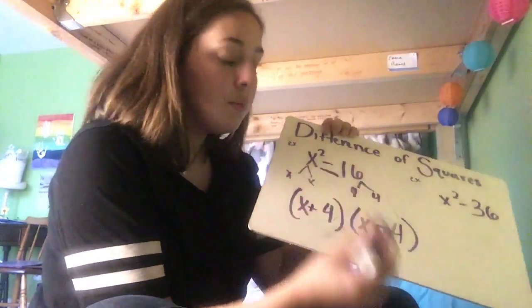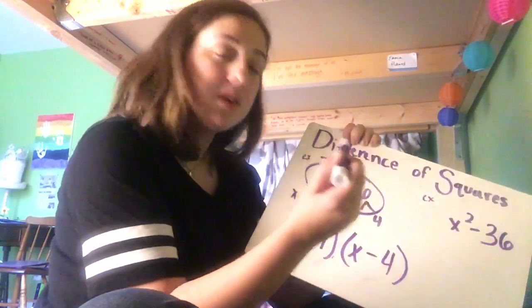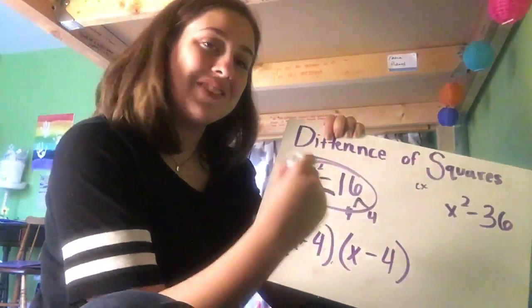Now, when we factor this out, there won't be a b number and it will be identical to this one. And that's how you factor using a difference of two squares.